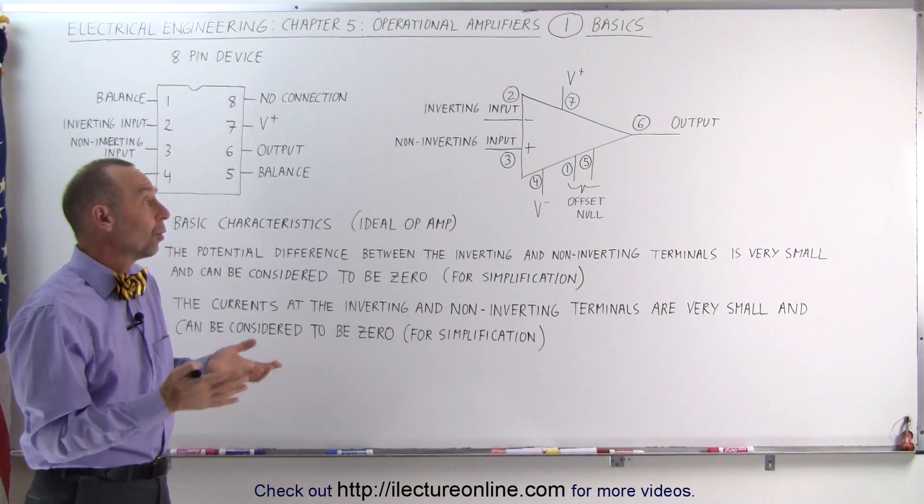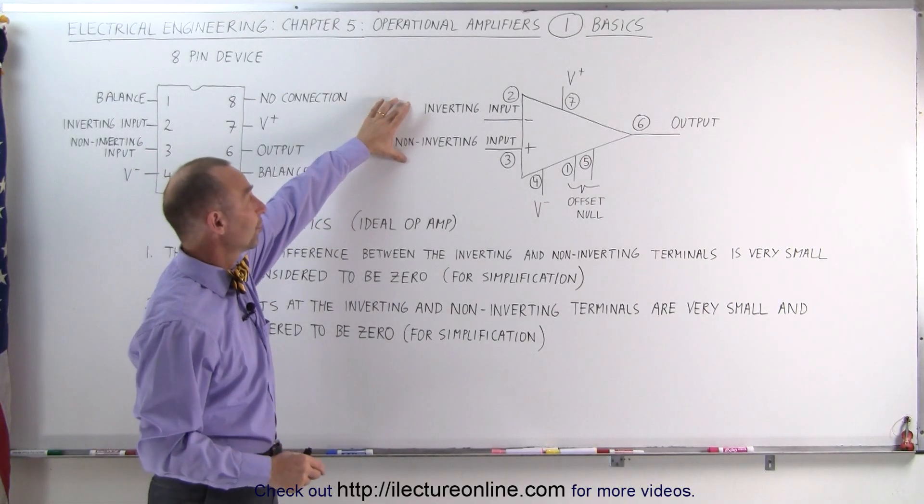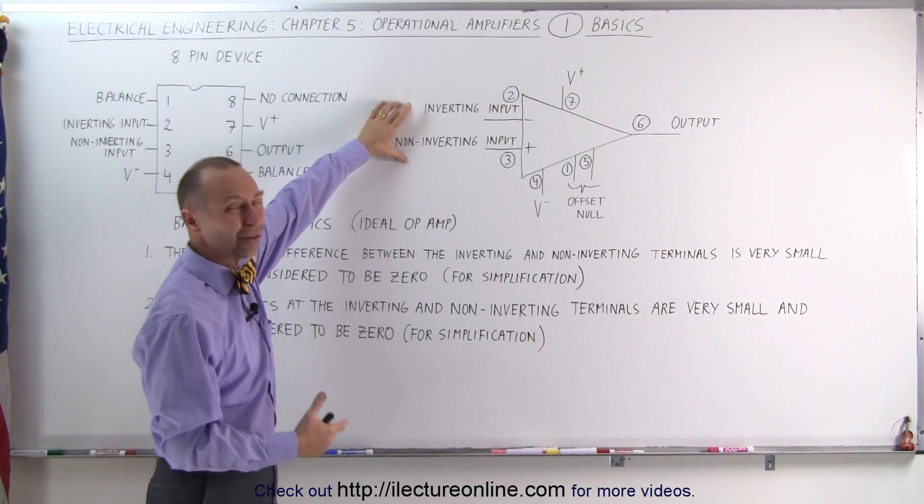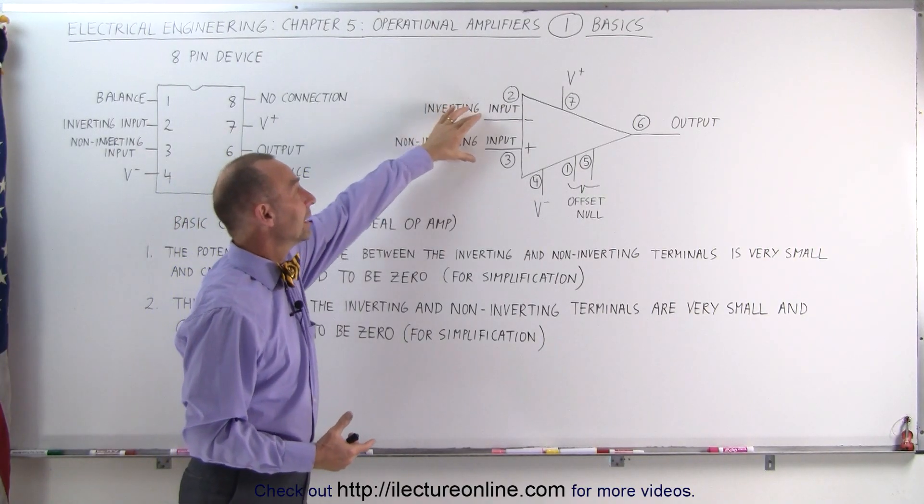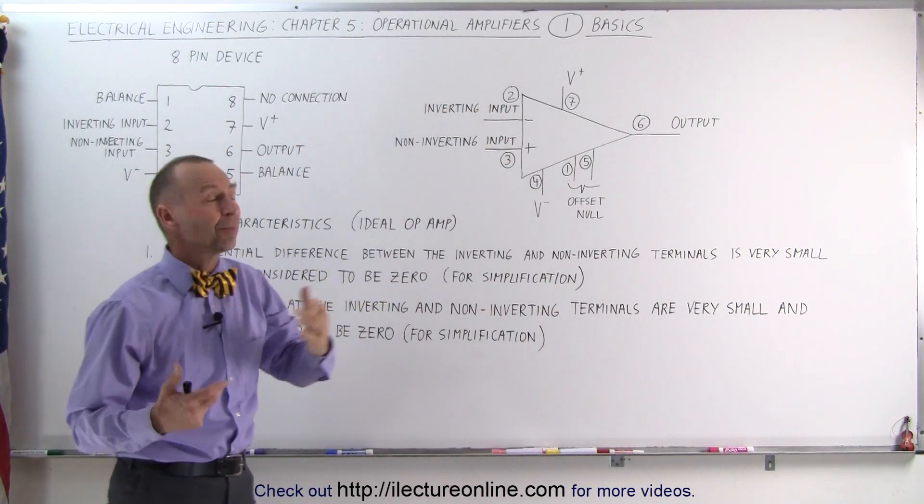To summarize, all we need to do for an operational amplifier is to realize that the potential difference between these is virtually zero, consider them to be zero. The input currents of these two pins, two and three, can be considered to be zero.